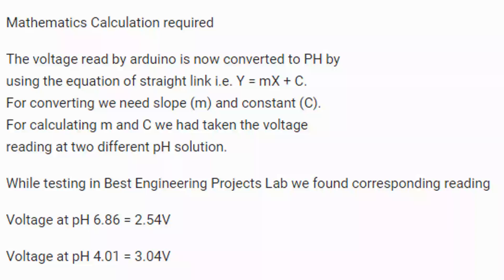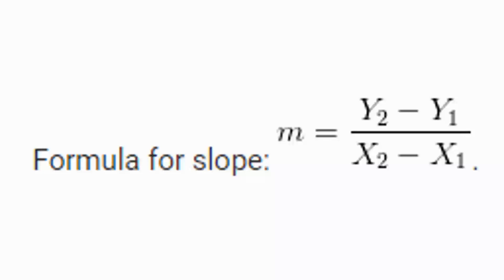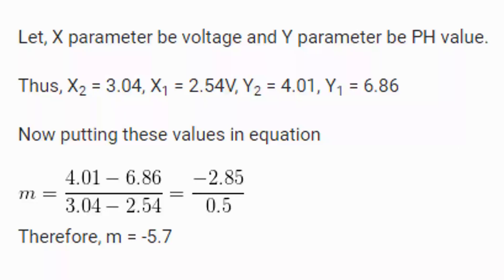While testing in Best Engineering Project lab, we found corresponding readings. Voltage at pH 6.86 is equal to 2.54 volts. Similarly, voltage at pH 4.01 is equal to 3.04 volts. Now, we all know the formula for slope: m equals y2 minus y1 divided by x2 minus x1. Let's say x parameter be voltage and y parameter be pH value.